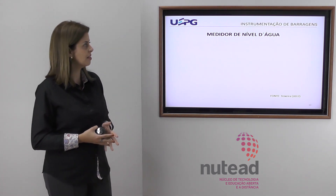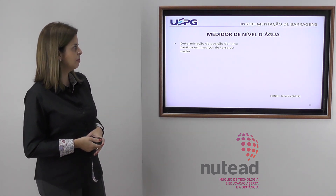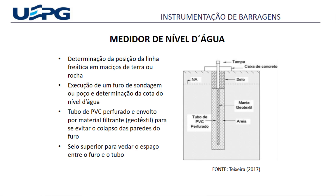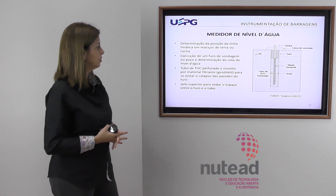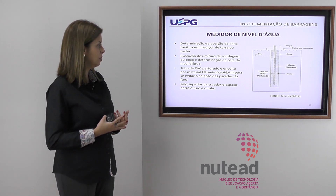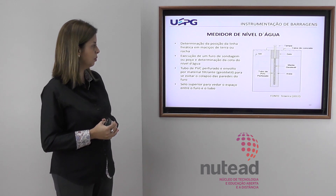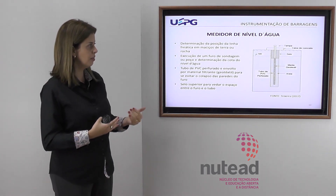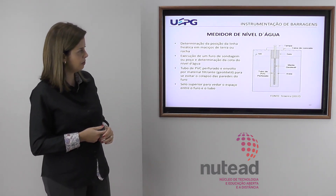O medidor de nível d'água é um instrumento mais simples que serve para determinar a posição da linha freática em maciços de terra ou rocha. É executado dentro de um furo de sondagem ou poço para determinar a cota do nível d'água. É colocado um tubo perfurado dentro do furo, envolto por um material filtrante como geotêxtil, para evitar o colapso das paredes do furo. Em cima há um selo superior para vedar o espaço entre o furo e o tubo, evitando águas percoladas pela superfície.